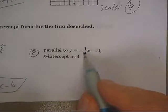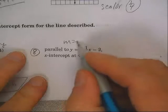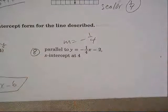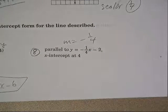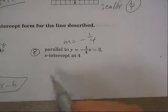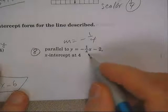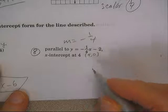Very good. This time they say parallel to this, so I'm going to use the slope is negative one-fourth because parallel lines have the same slope. That's why they don't cross. And the x-intercept is a point on the x-axis.